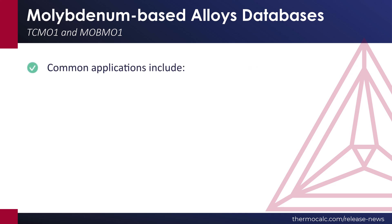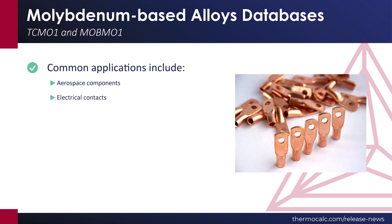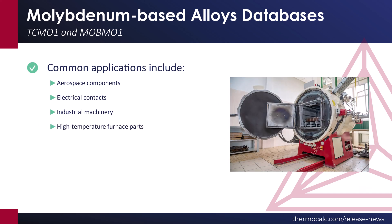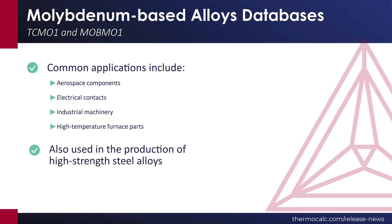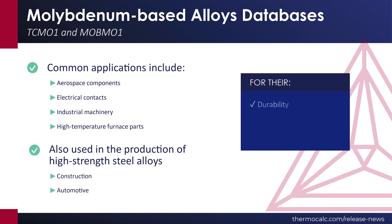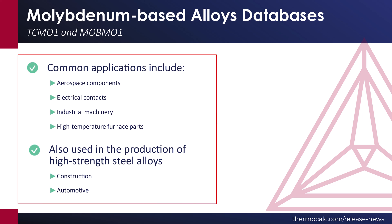Common applications for molybdenum alloys include aerospace components, electrical contacts, industrial machinery, and high-temperature furnace parts, due to their excellent mechanical, thermal, and corrosion-resistant properties. They are also used in the production of high-strength steel alloys, which are crucial in the construction and automotive industries for their durability and resistance to corrosion and heat. The databases have been developed with these applications in mind.